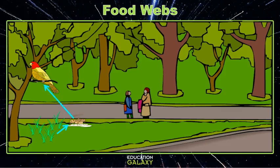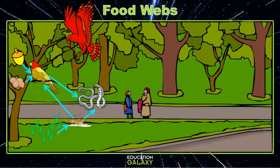But in nature it isn't that clean and easy. Instead of just these three organisms, there would actually be hundreds more. Let's say that the finch also eats nuts from the tree. And maybe a snake comes in and eats some of those crickets, but he also eats birds. And maybe there's a hawk circling around, and he eats birds and snakes.